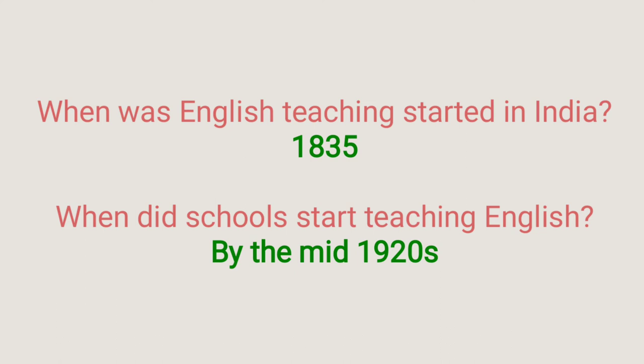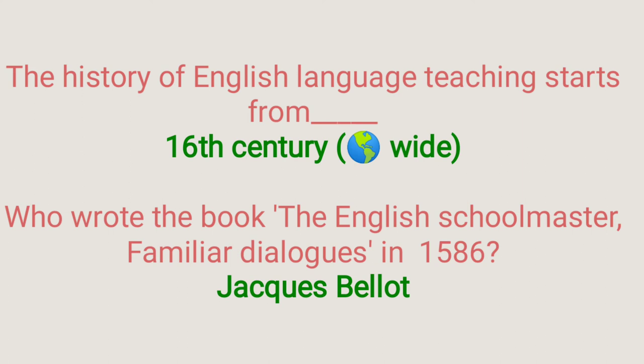When was English teaching started in India? Answer is 1835. When did schools start teaching English? By the mid-1920s. The history of English language teaching starts from the 16th century worldwide. Who wrote the book 'The English Schoolmaster: Familiar Dialogues' in 1586? Answer is Jacques Bellot.